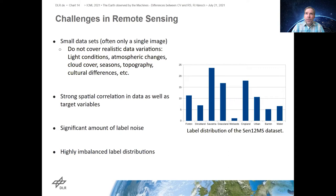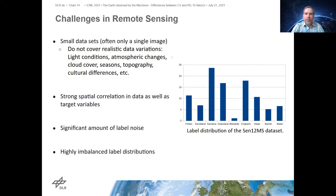Last but not least, we have very imbalanced label distributions because in earth observation some classes appear much more often than others — some classes are simply rare compared to, say, urban areas. All of this makes remote sensing a very exciting research field with many challenges that can be solved with machine learning, which is why we're here.